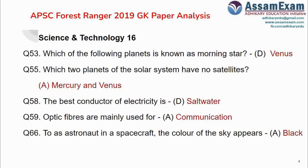Next question: which two planets of the solar system have no satellites? Correct answer is Mercury and Venus. So, we have seen these two questions are from solar systems.